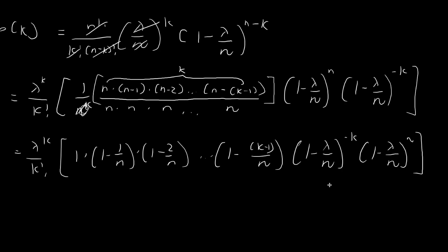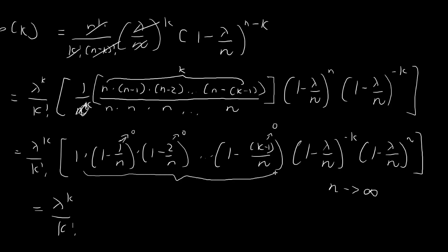Now, what happens when n tends towards infinity? Each one of these terms — 1 over n, 1 over n, and so on — will all tend towards 0, so each factor will tend towards 1. We have a finite number of k terms, so the overall product also tends towards 1. The same goes for 1 minus lambda over n to the power of negative k, which also tends towards 1.